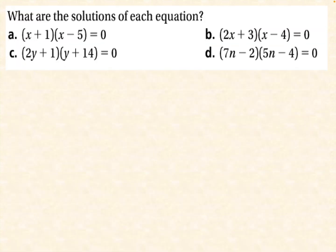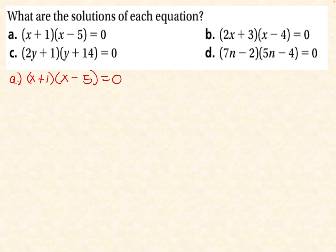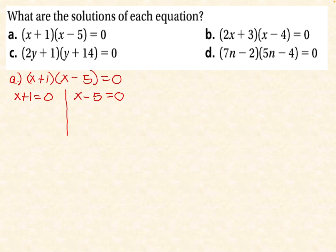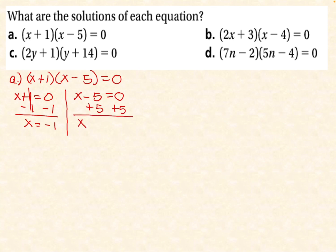Next, what are the solutions of this equation? Letter A: separate the two factors and equate each to 0. We have x plus 1 equals 0, and x minus 5 equals 0. Get the opposite: negative 1 on both sides gives x equals negative 1. For the second factor, positive 5 on both sides gives x equals 5. So the values of x are negative 1 and positive 5.